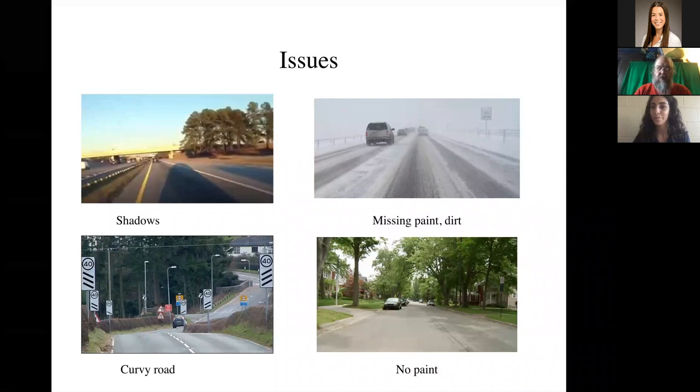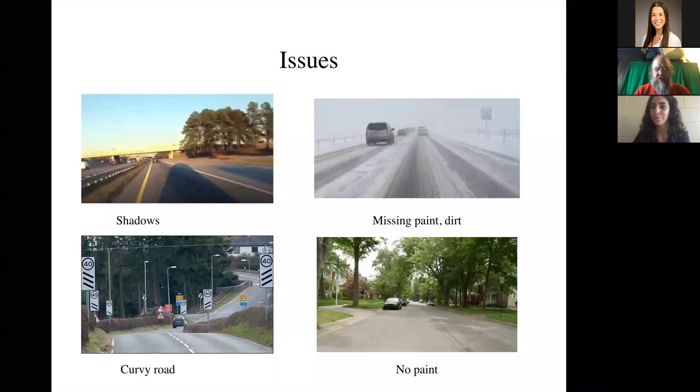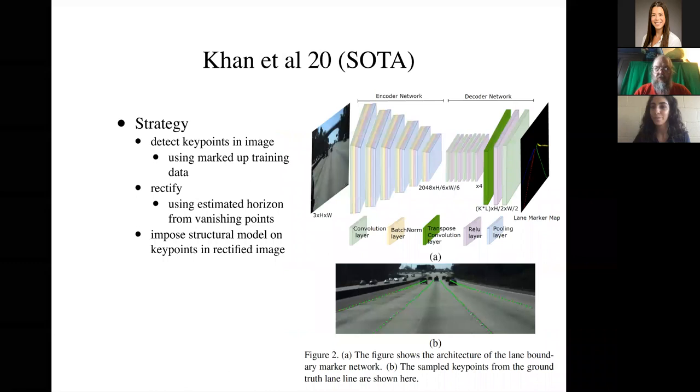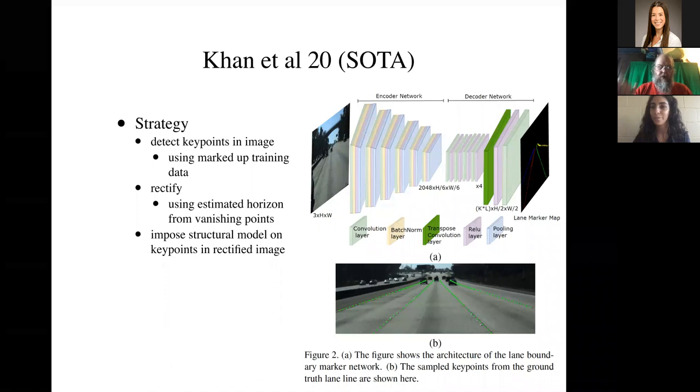It can get hard. So there are a bunch of things that create serious problems here. One is shadows. You can see the car casting a shadow, quite a deep shadow on the paint, which could disrupt the reflection of the paint. Another is bad weather. You can see the snow is creating problems with the paint and visibility and the like. Curvy roads present very serious problems. This is a sort of dip in the road in the UK. And then, of course, there are lots of roads without any paint on them. The best known lane boundary detector is due to Khan et al. It came out in 2020. It's state-of-the-art on almost all of the challenges. And it uses a fairly straightforward strategy. You detect key points in an image using marked up training data. You basically build a big neural network that detects key points. The key points are marked up. So on the right at the bottom, you can see points marked on the lanes by some patient soul at the other end of Amazon Mechanical Turk, I believe. You then rectify the image from the estimated horizon so that you are working in the ground plane rather than in the frontal plane. That's sort of an established computer vision trick. And then you say, on the ground plane, lane boundaries are parallel and they have very simple geometric forms. And you impose that structural model. And that gets very good lane boundary detection.